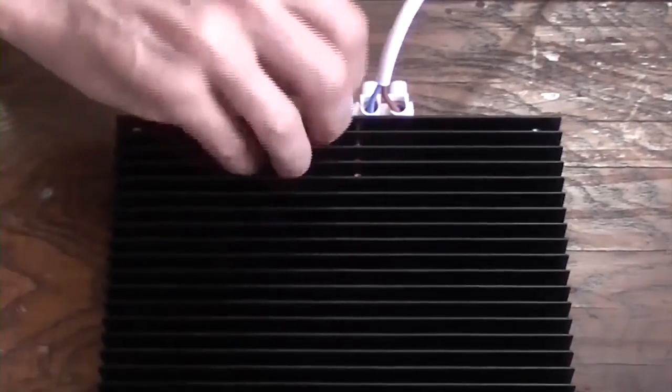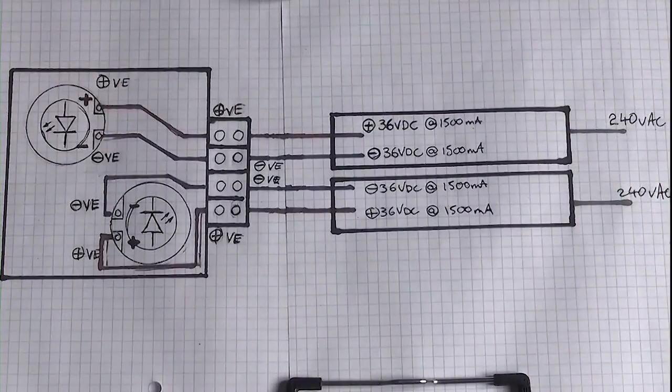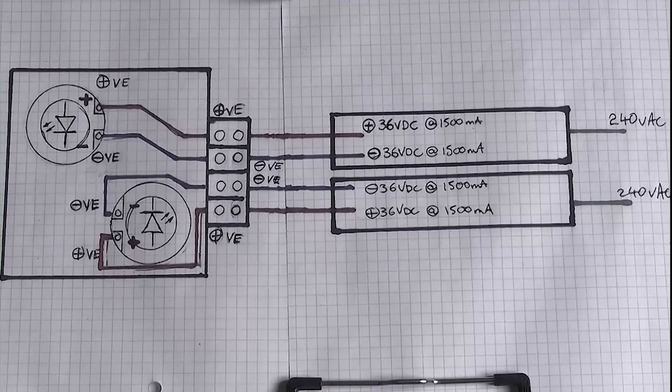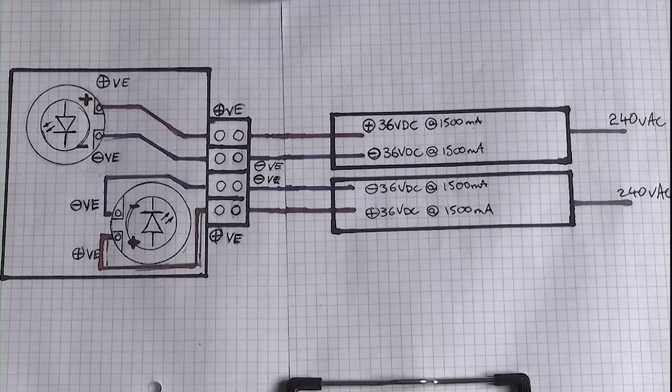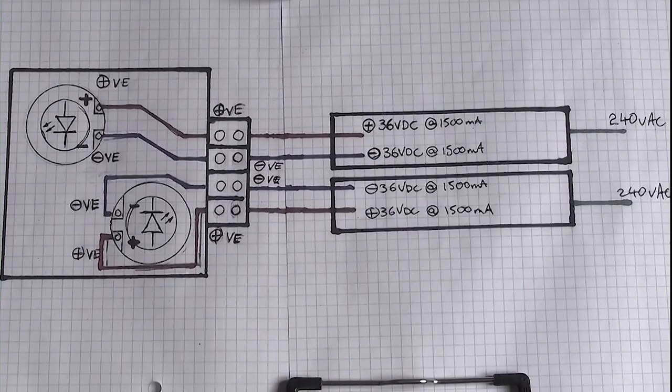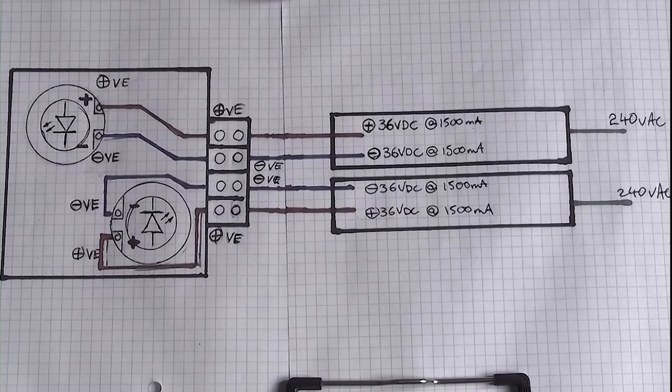And here's the diagram of our layout with the two drivers driving independently to the two cobs. These are driving at approximately 36 volt DC at 1500 milliamps. This is a little below the total permissible drive current for these cobs, well below in fact. So they'll be under driven.